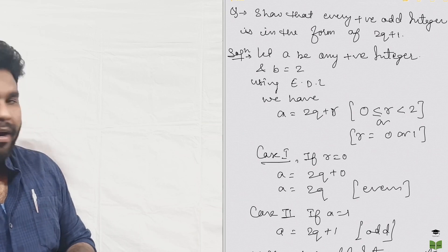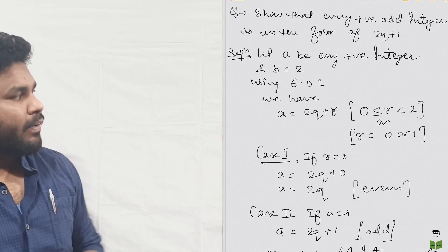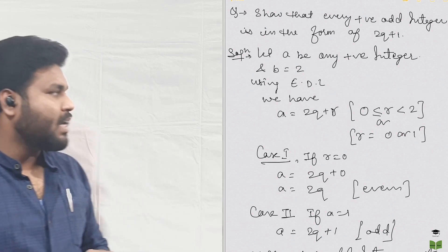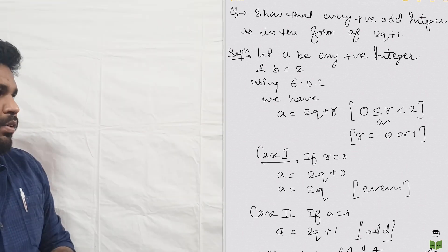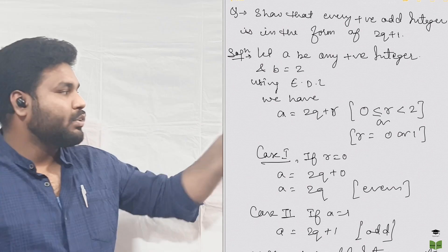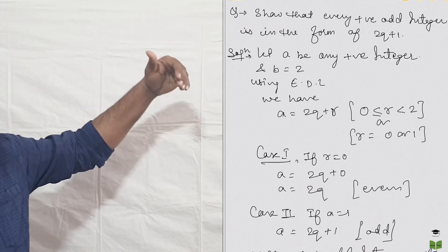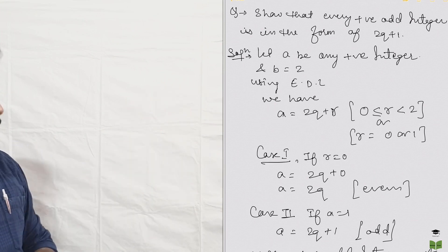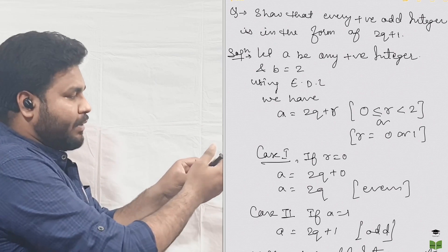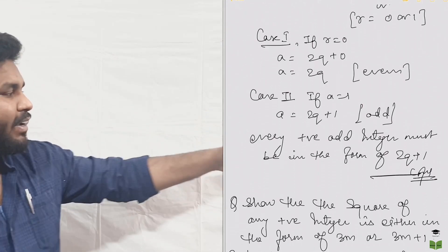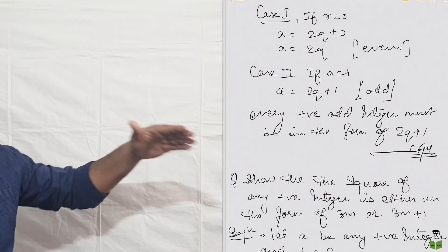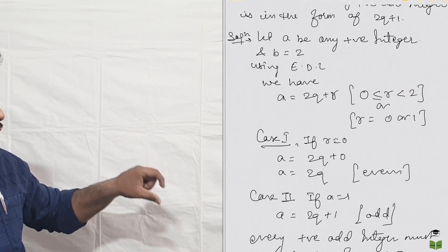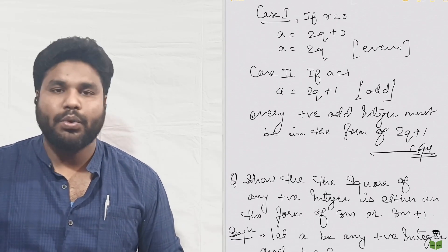Using Euclid Division Lemma, we have A equals 2Q plus R, where R is always greater than or equal to 0 and less than 2. That means R is either 0 or 1. Case 1: when R equals 0, then A equals 2Q plus 0, so A equals 2Q. That means 2 divides A evenly, so this is an even number. Case 2: when R equals 1, then A equals 2Q plus 1, and here the remainder is 1, so we can say this is odd. We conclude that every odd positive integer is in the form of 2Q plus 1.